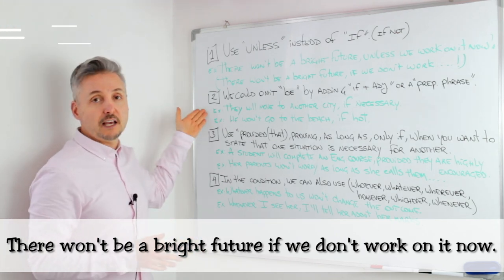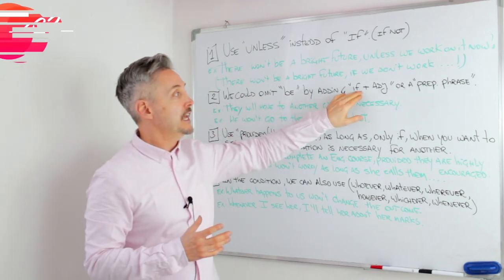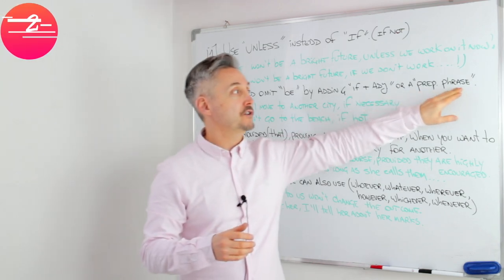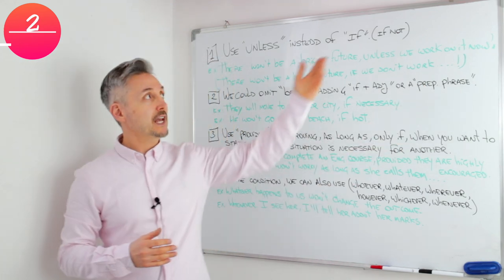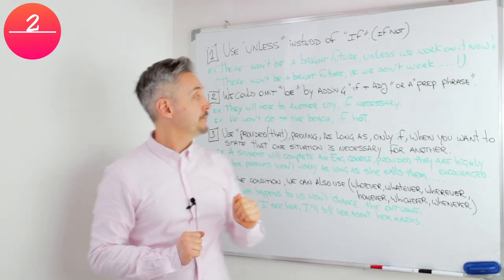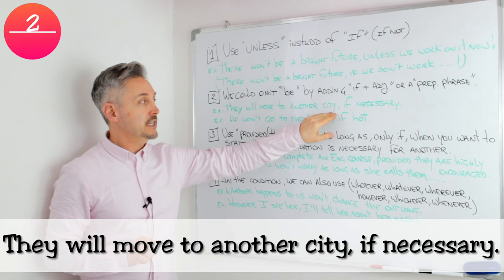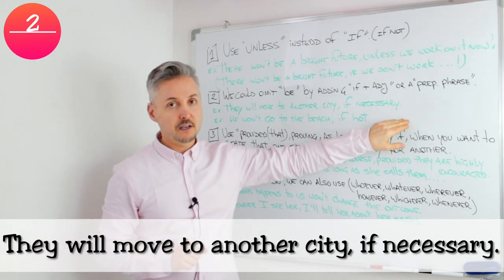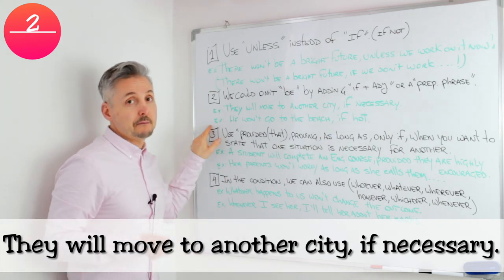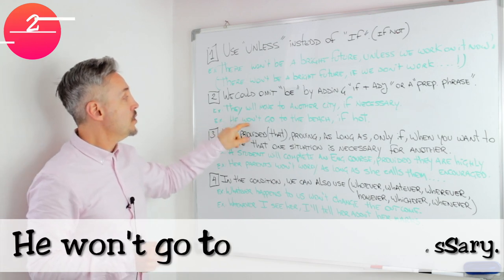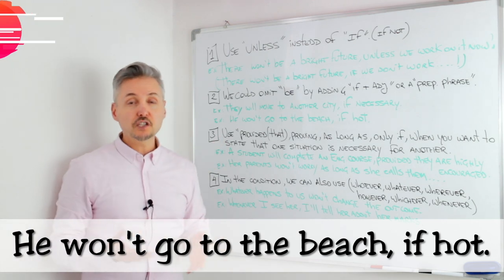Now the second tip: we can omit the verb 'to be' by adding if plus an adjective or a prepositional phrase. If you don't know what a prepositional phrase is, you can click here and watch a lesson on that. The example I gave at the beginning was: they will move to another city if necessary — so we have if plus adjective 'necessary.' Another example: he won't go to the beach if hot; he will go to the beach if warm.